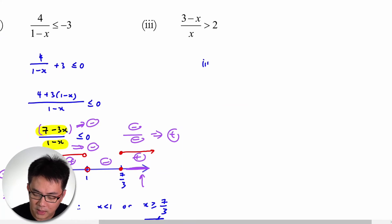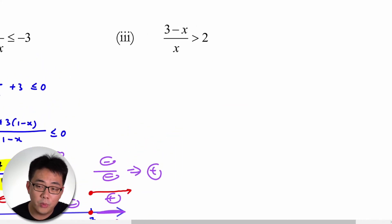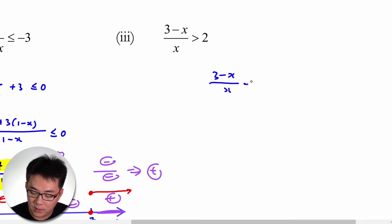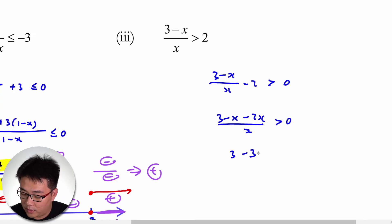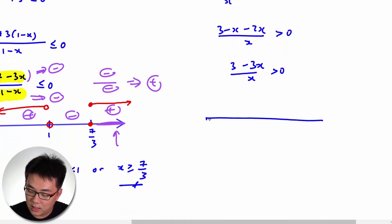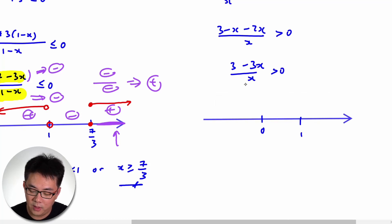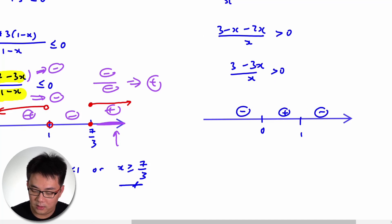For the third question, I move the minus 1/2 over to get 3/x minus 1/2 bigger than 0. Note x cannot equal 0. Combining into a single fraction: (3 minus x/2) over x, which simplifies to (3 minus 3x/2) — wait, working through it gives (3 minus 3x) over x bigger than 0. The roots are x = 0 (denominator) and x = 1 (numerator). Testing x = one million: the numerator is negative and the denominator is positive, giving an overall negative result.